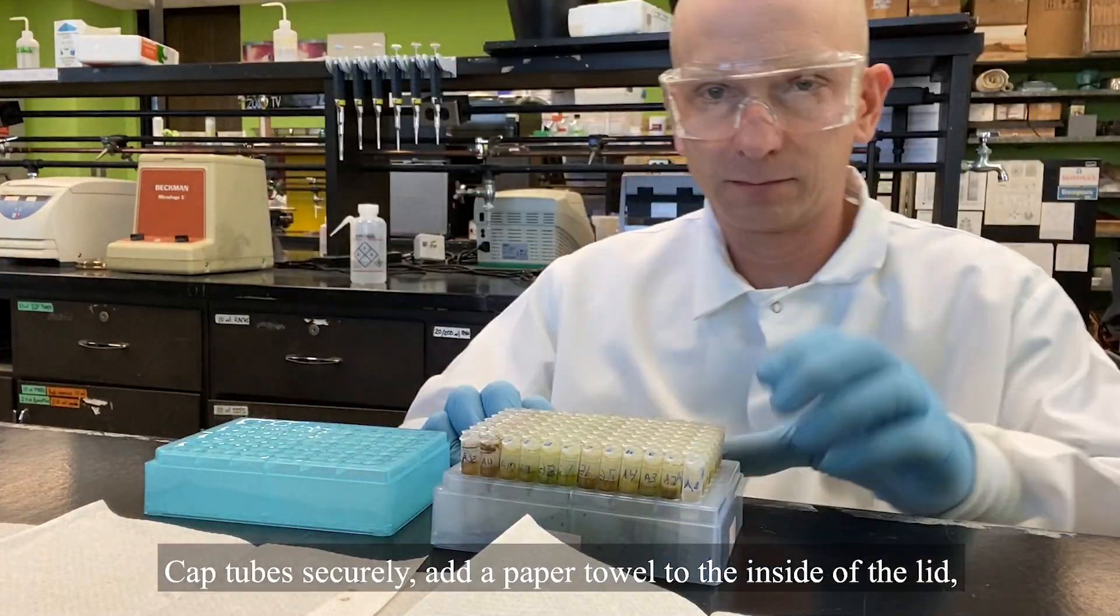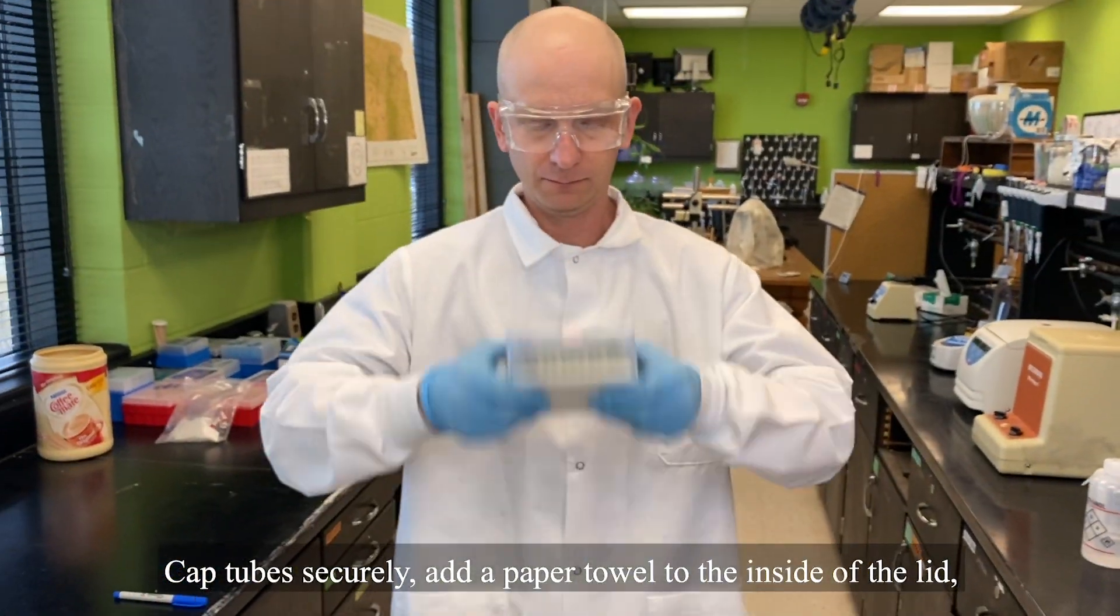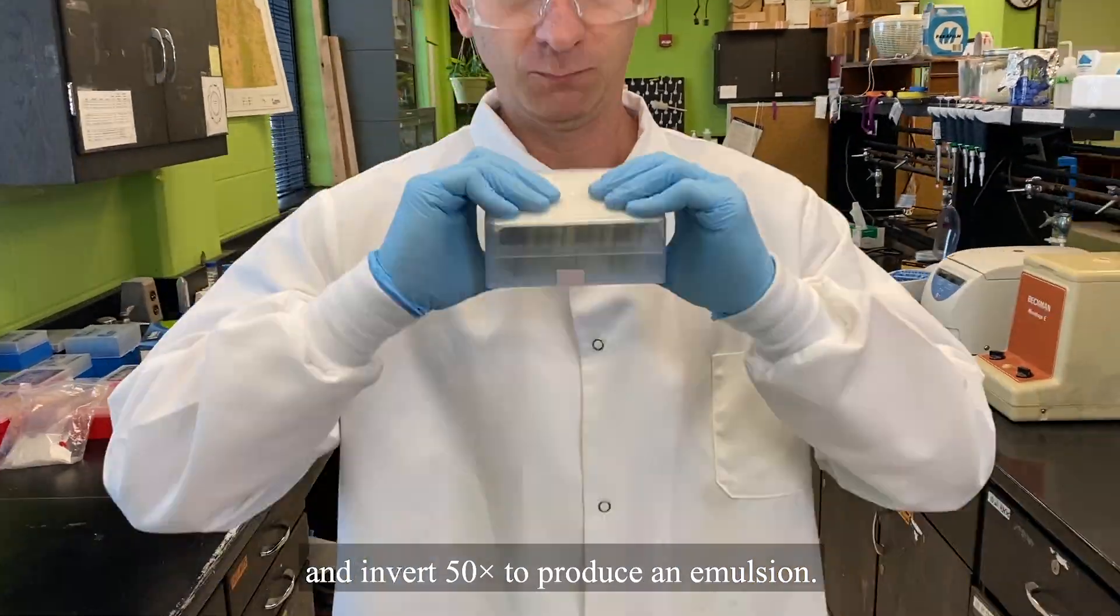Cap tube securely, add a paper towel to the inside of the lid, and invert 50 times to produce an emulsion.